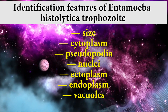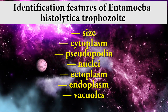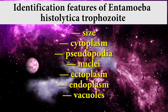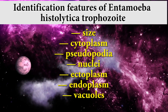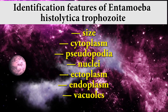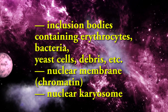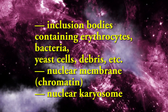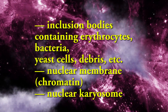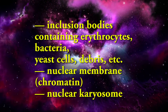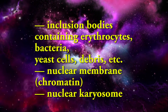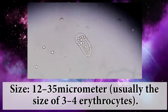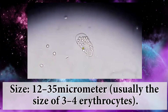Key features include: size, cytoplasm, pseudopodia, nuclei, ectoplasm, endoplasm, vacuoles, inclusion bodies containing erythrocytes, bacteria, yeast cells, debris, etc., nuclear membrane, and nuclear karyosome.